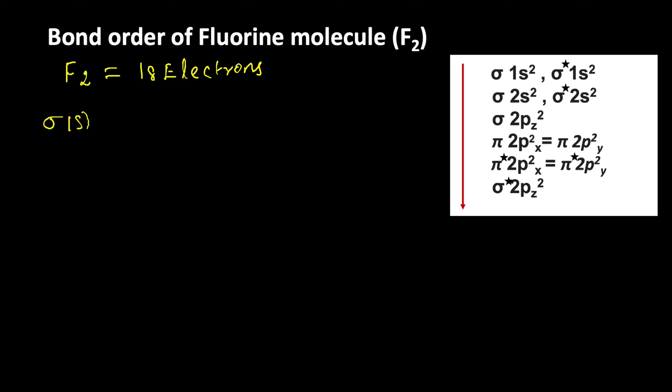Sigma 1s², sigma star 1s², then sigma 2s², after that electrons enter into sigma star 2s², then sigma 2pz².